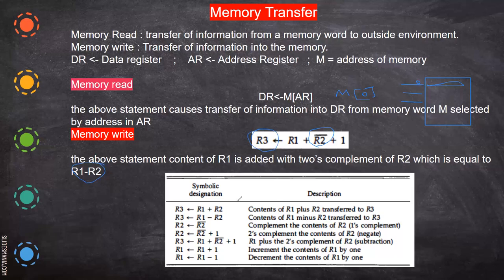Some symbolic designations: R1 + R2 stored in R3 represents addition. R1 minus R2 stored in R3 represents subtraction. The complement of R2 placed back in R2 represents complementing. R1 plus 1 represents incrementing — for example if R1 was 5, after execution it becomes 6. Similarly, decrementing decreases the value by 1.